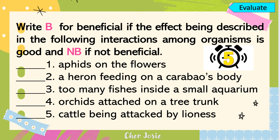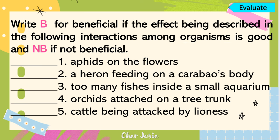To know if you understood our lesson, let's have a seat work. Write B for beneficial if the effect described is good, and NB if not beneficial. Let's check your answers: number 1, aphids on the flowers — the correct answer is NB or not beneficial, because it is an example of harmful interaction. Number 2, a heron feeding on a carabao's body — it is B or beneficial because they both benefit. Number 3, too many fishes inside a small aquarium — it is NB or not beneficial because it causes harm to the fishes.